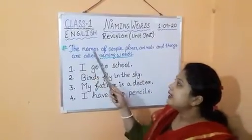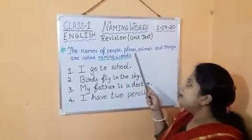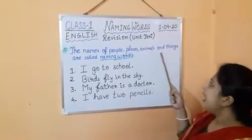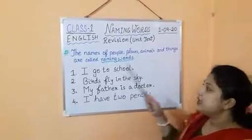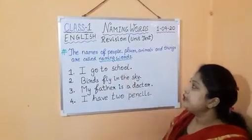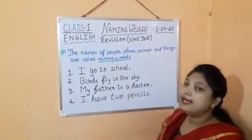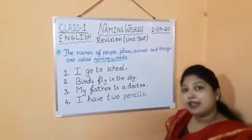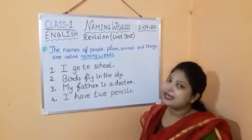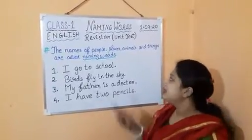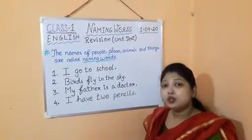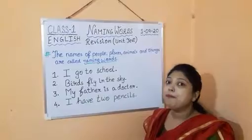The names of people, places, animals and things are called naming words. People like father, mother, teacher etc. Places like school, park, zoo etc.